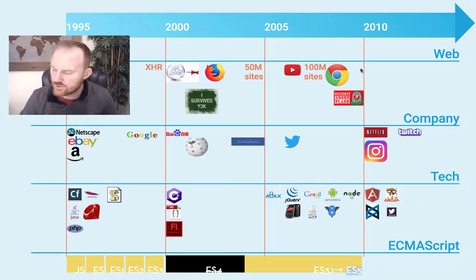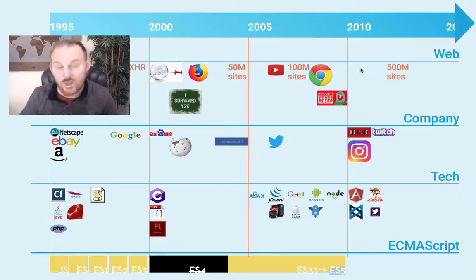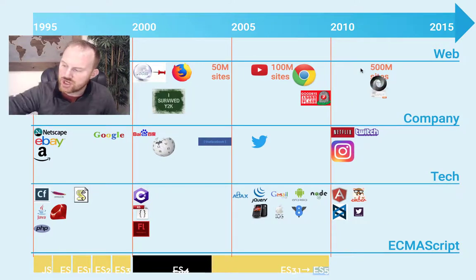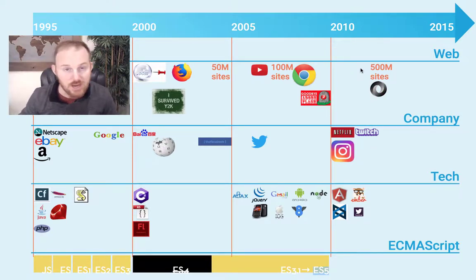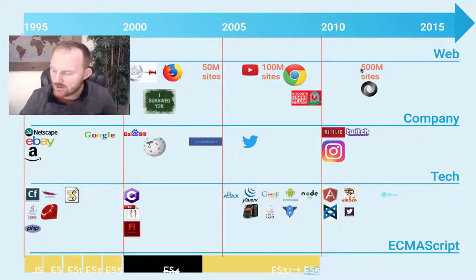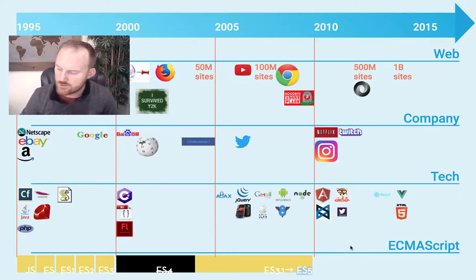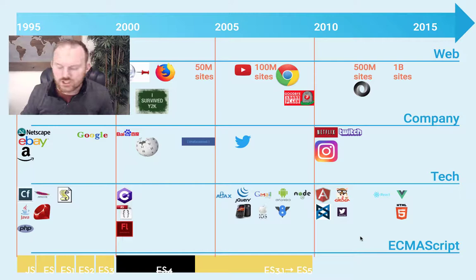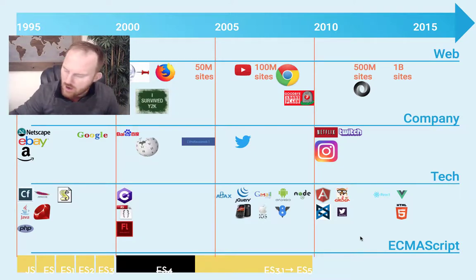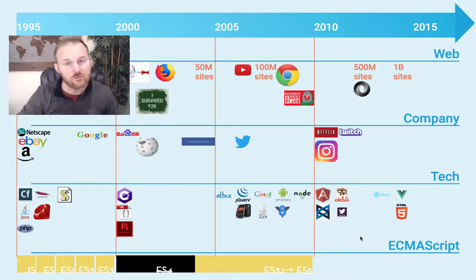In 2011, Ember comes out along with Twitter Bootstrap and Twitch. In 2012, we hit the half-billion mark for websites, and JSON finally replaces XML as the predominant way to pass data around APIs. In 2013, React comes out. In 2014, we hit one billion websites, Vue.js is released, and HTML5 is standardized. JavaScript, modernized somewhat in ES5 with functional programming components like map, filter, and reduce, is still way behind powering huge sites front-end and back-end via React, Angular, and Node.js.